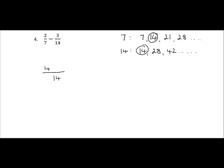Here we have 3 over 14. 14 to 14 goes once, 1 by minus 3 is still minus 3. So it's 4 minus 3, which is 1 over 14. And that's our final answer.